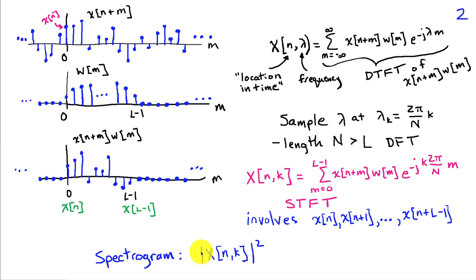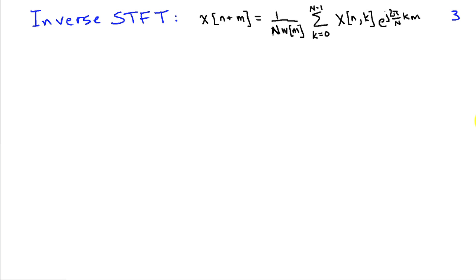The spectrogram is defined as the magnitude squared of the short time Fourier transform. The short time Fourier transform is invertible, and I've written the expression for the inverse short time Fourier transform here. Once you compute a spectrogram though, you're taking a magnitude squared, which means you're throwing away phase or sign information, and that is not invertible. If we stick with the short time Fourier transform, we can recover the time signal.